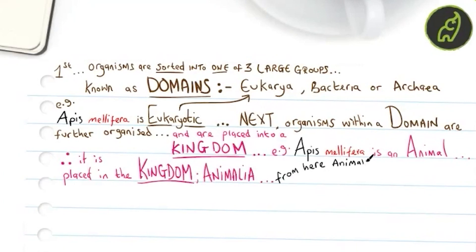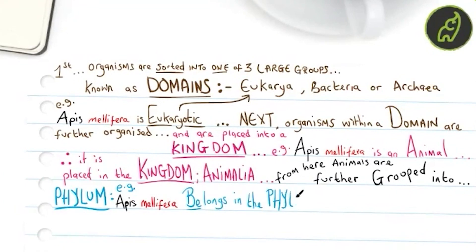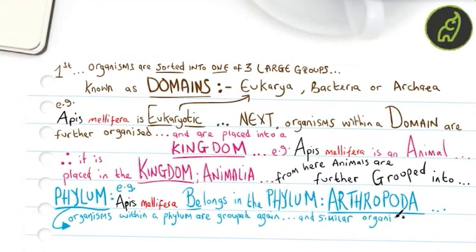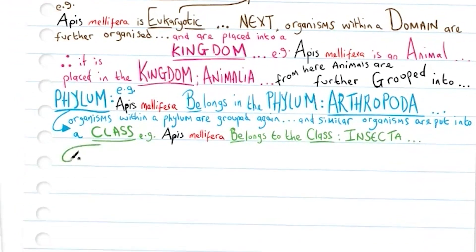From here the animals are further grouped into phylum. Apis mellifera belongs in the phylum Arthropoda. Next, organisms within a phylum are grouped again and similar organisms are put into a class. Apis mellifera belongs to the class Insecta, and class will be grouped again into an order. Apis mellifera belongs to the order Hymenoptera.